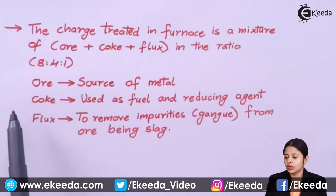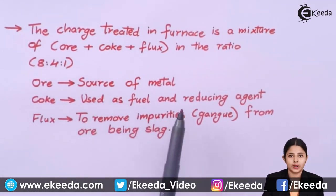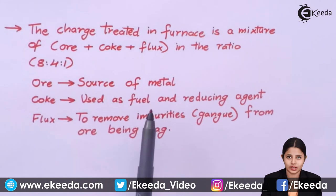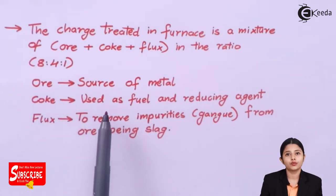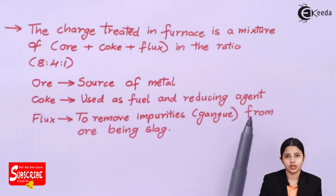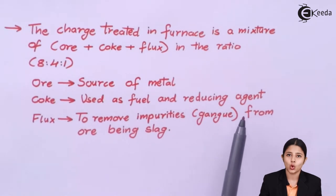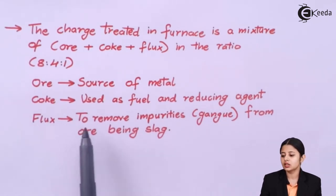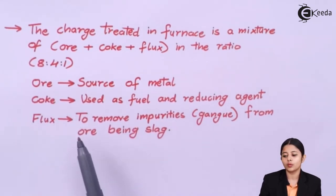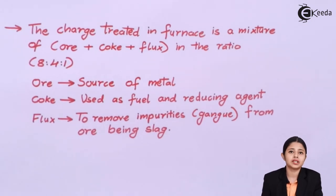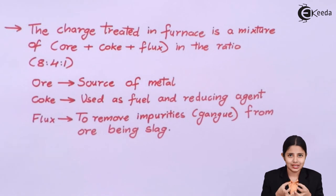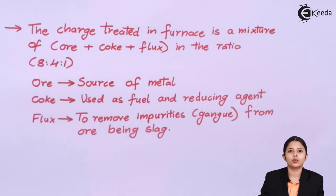Ore is the source of metal from which the metal has to be extracted in its purest form. Coke is the fuel used as a reducing agent — generally it is coal. Flux is used to remove impurities and gangue from the ore by forming slag. The flux gets mixed with all the impurities to form a substance known as slag, and this substance gets out through an opening.